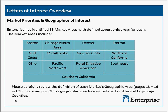Enterprise has identified 13 market areas with defined geographic areas for each. These market areas include Boston, the Chicago metro area, Denver, Detroit, the Gulf Coast, Mid-Atlantic, New York City, Northern California, Ohio, Pacific Northwest, North American, Southeast, and Southern California. We ask that you carefully review the definition of each market's geographic area, which is on pages 13 and 16 in the LOI. For example, Ohio's geographic area focuses only on Franklin and Cuyahoga counties.